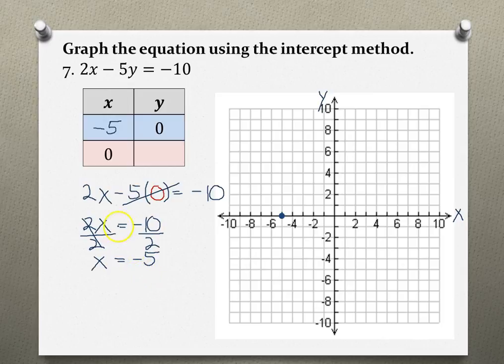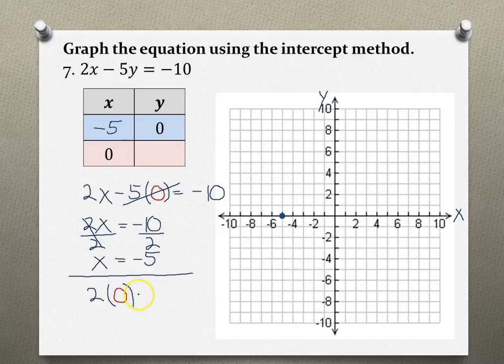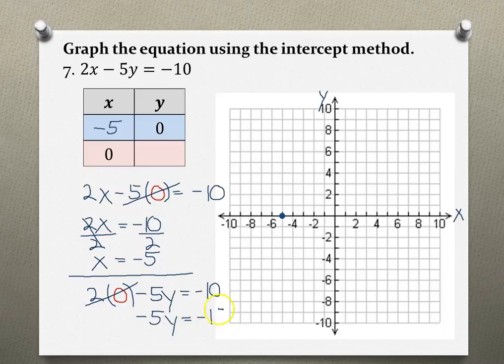Now to find my y-intercept, I have to do the same, but this time I'm going to plug in a 0 for x. Let's use our original equation, plugging in a 0 for x, and this time solving for y. 2 times 0 is 0, so that cancels out, and we're left with negative 5y equals negative 10. Dividing by negative 5 on both sides.